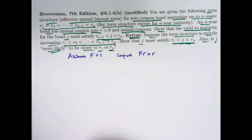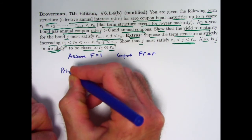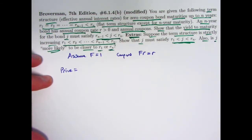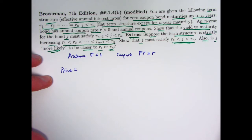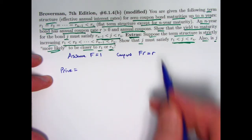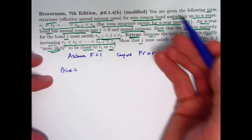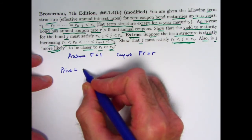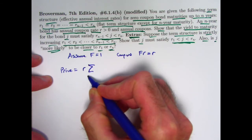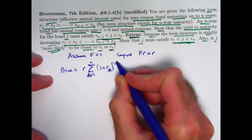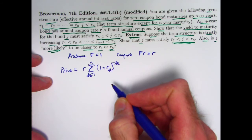Let's think about the price of the bond in two ways. You could think about the price in terms of the term structure, in terms of these r's. Using summation notation: the present value of all the coupon amounts is r times the sum from k equals 1 to n of (1 + r_k)^{−k}. That would be the present value of all the coupons discounted according to this term structure. When k is 1, 2, 3 up through n−1, those spot rates are all the same, but let's leave it as an arbitrary r_k anyway — that'll help for the extra part.